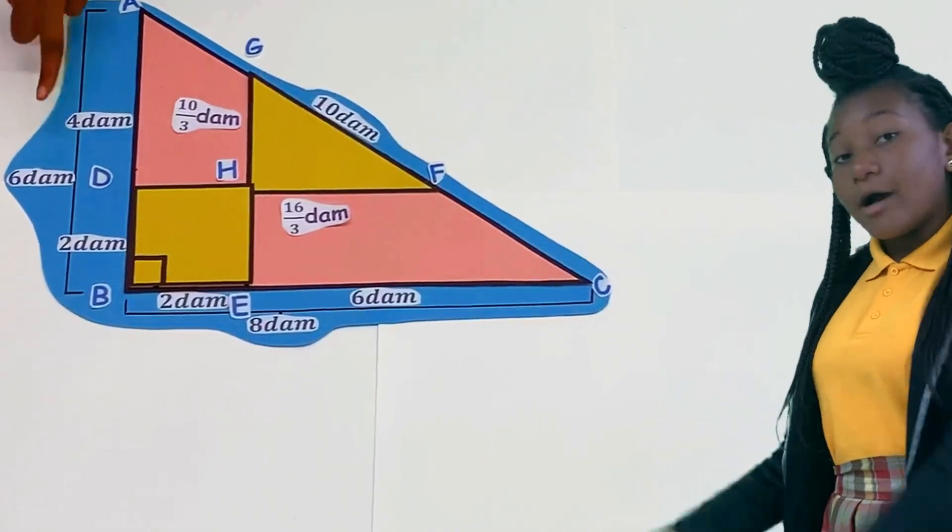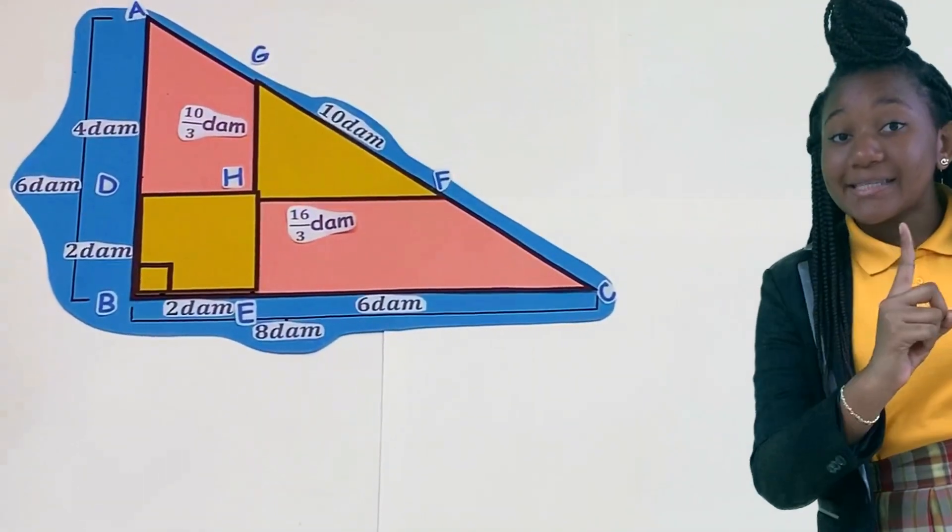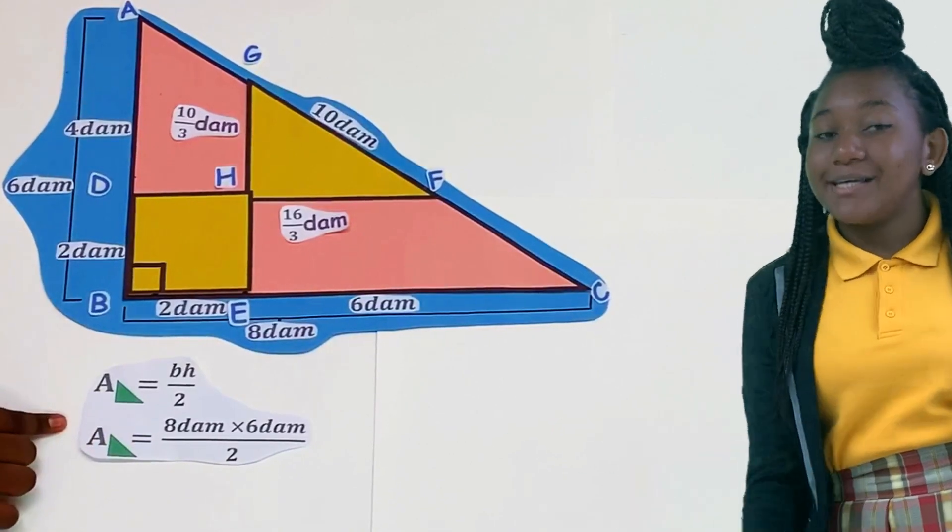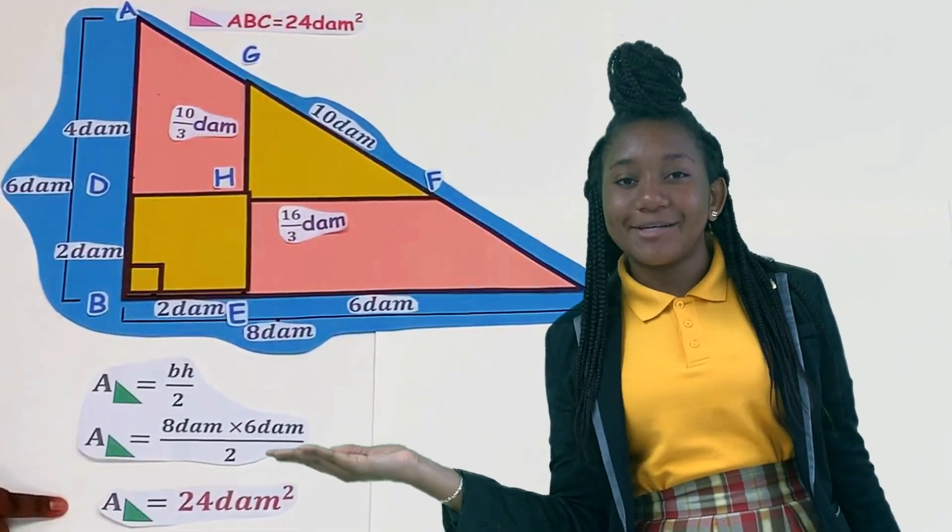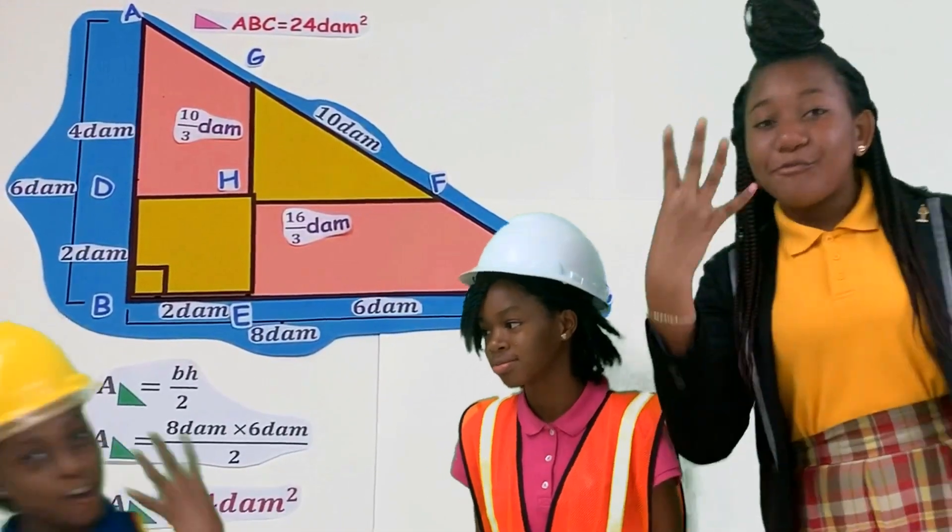The two legs of the right triangle are 6 and 8 decimeters. Base times height divided by 2 or 6 times 8 divided by 2 is 24. The area of the right triangle ABC is 24 decimeters squared.